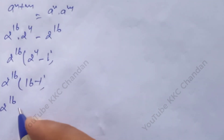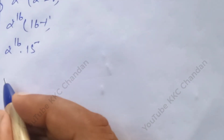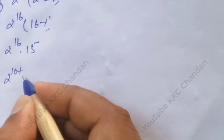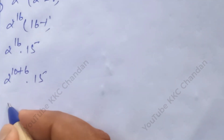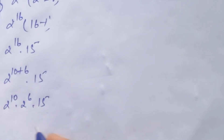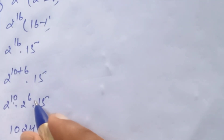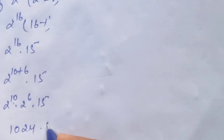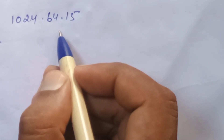2 power 4 means 16, minus 1 equals 15. So we have 2 power 16 into 15. Now 2 power 16 is written as 2 power 10 into 2 power 6 into 15. The value of 2 power 10 is 1024, and 2 power 6 is 64, so we get 1024 into 64 into 15.